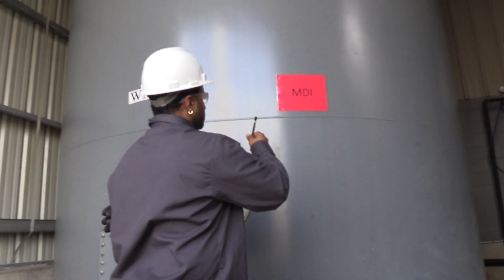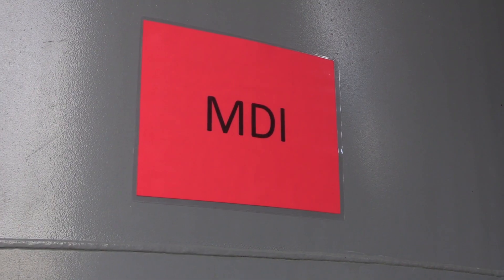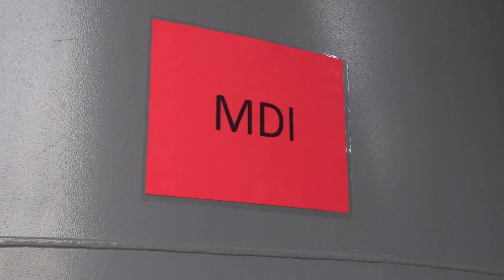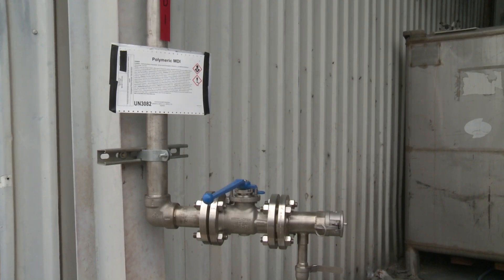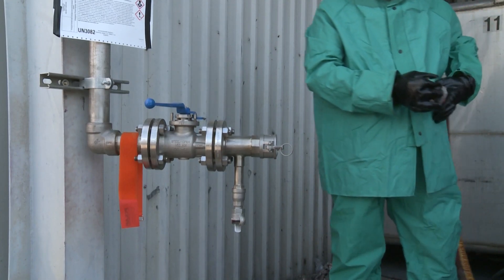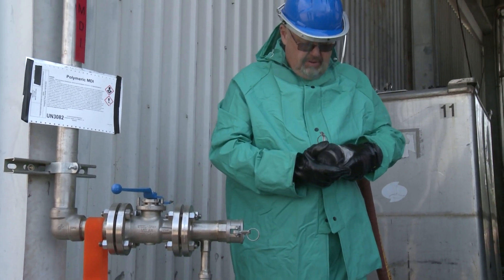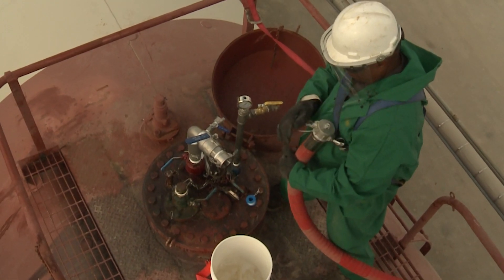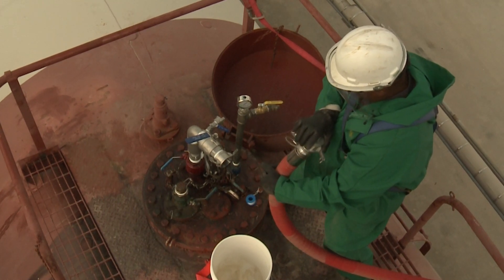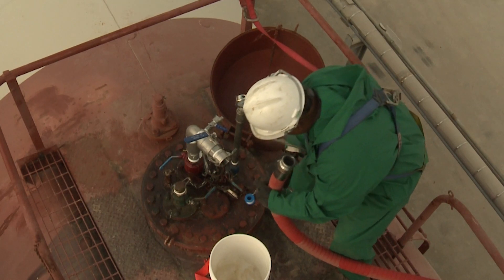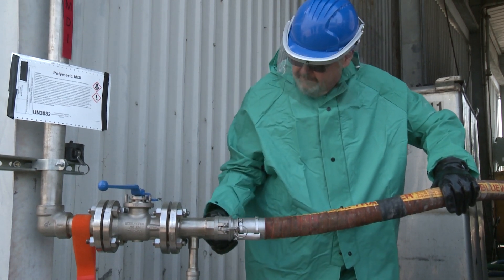Una vez completadas las verificaciones de documentación y del carrotanque, compruebe su propio equipo. Si el contenido se va a descargar a un tanque receptor, asegúrese de que el tanque sea el correcto para el producto y que haya suficiente espacio. Identifique claramente la conexión de descarga en la línea receptora. Verifique las mangueras de descarga antes de hacer cualquier conexión. Las mangueras de MDI generalmente tienen un diámetro de 2 pulgadas para diferenciarlas de las mangueras de 3 pulgadas usadas para productos de poliol. Las mangueras también pueden codificarse por color para ayudar a eliminar errores de transferencia.